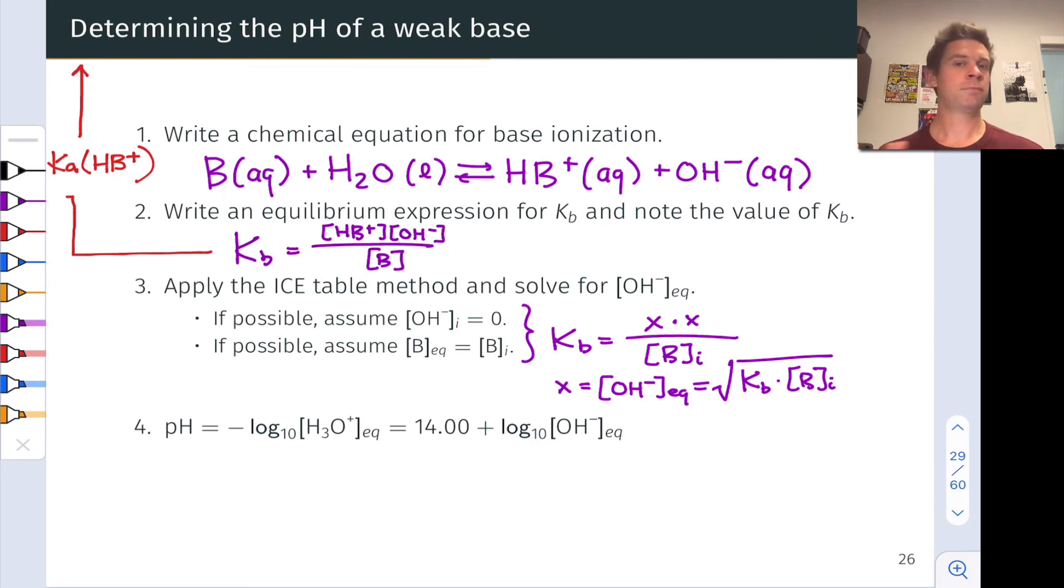So at this point, again, in a kind of classic ICE table type of problem, we'd be done. We've arrived at equilibrium concentrations and the value of X, but we want to find pH.